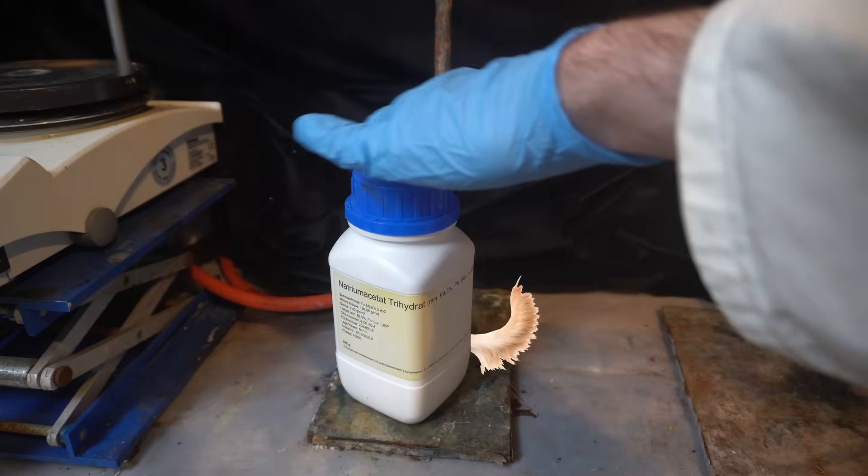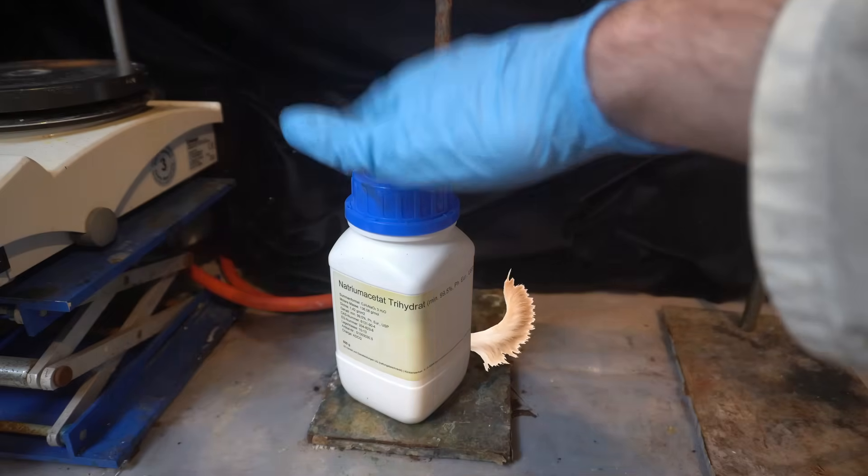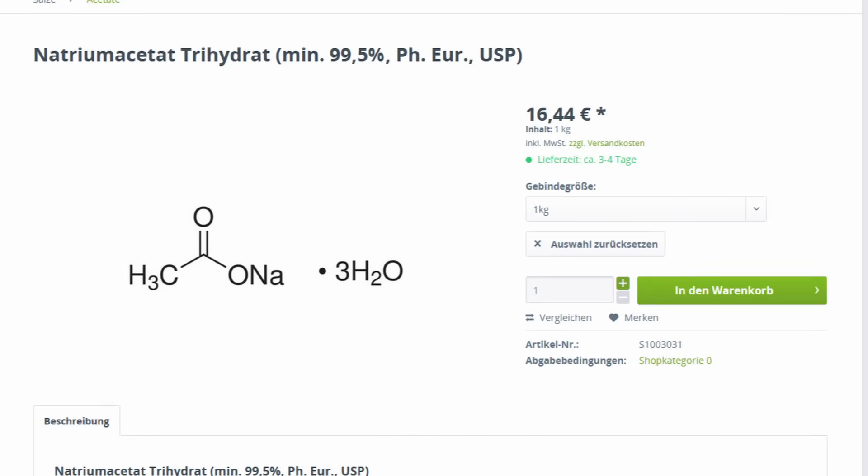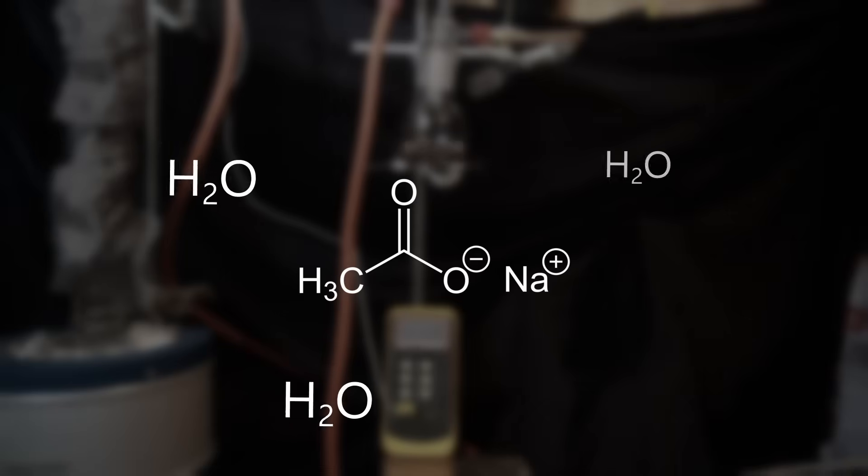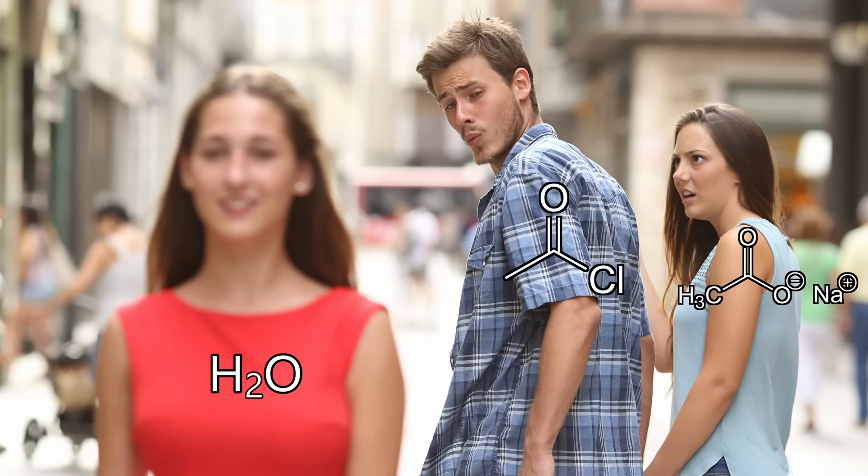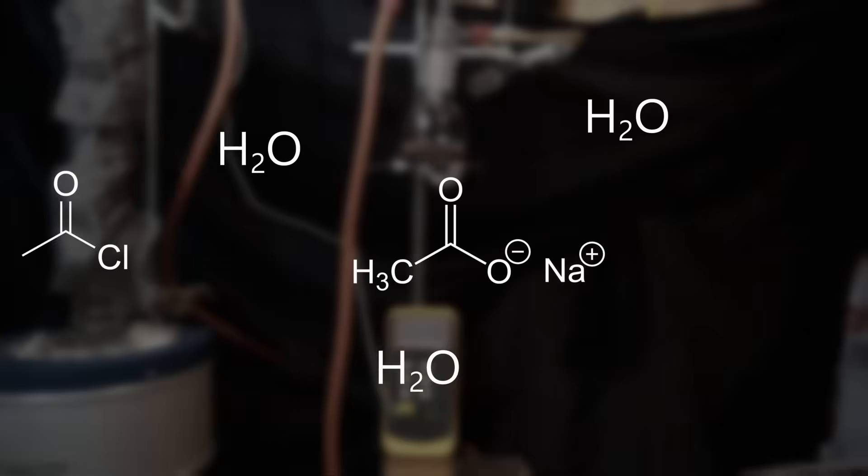Well, at least the sodium acetate is a good boy and doesn't need my lab equipment. The commercial variant is sold as a trihydrate, which means there are three molecules of water associated with every molecule of sodium acetate. As we've seen, acetyl chloride reacts quite readily with water, and it would just turn into acetic acid. So that water has to go before the reaction.